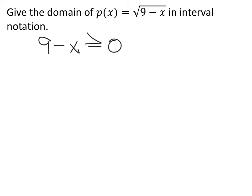From here we just solve like we would a regular inequality. So some of you guys would add x to both sides. Some of you guys would subtract 9 from both sides and it doesn't matter which one you do.